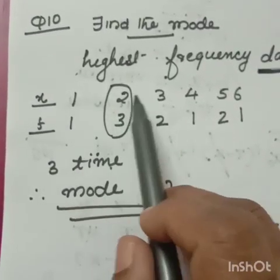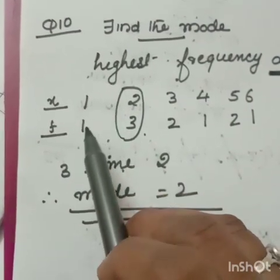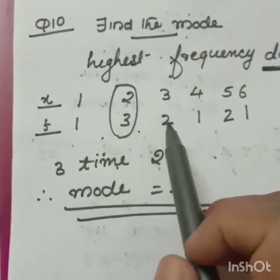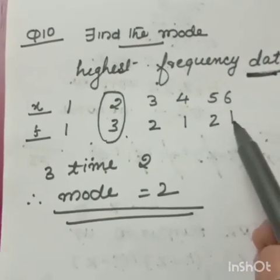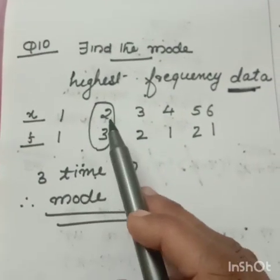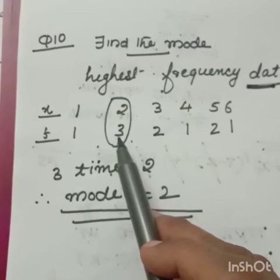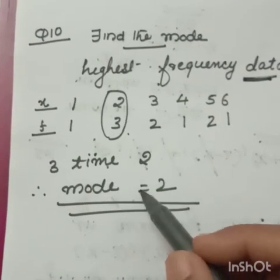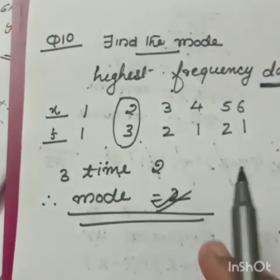X data given 1, 2, 3, 4, 5, 6. Frequency also. X 1 time, 2 three times, 3 two times, 4 one time, 5 two times, 6 one time. Question number 10. 2 data came 3 times. This is the highest frequency. So 2 is the mode. The data is the mode. Highest frequency data is called mode.